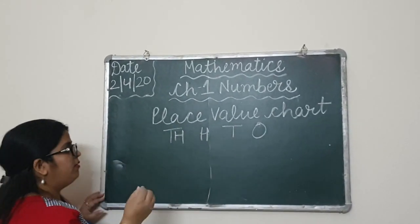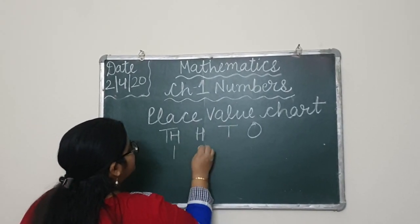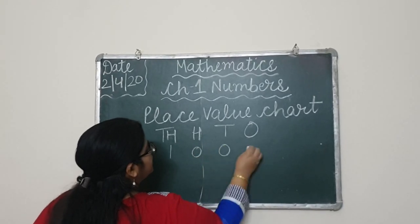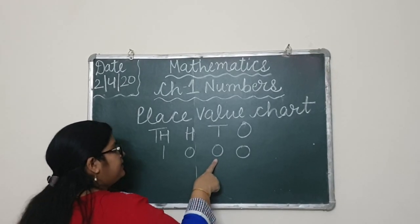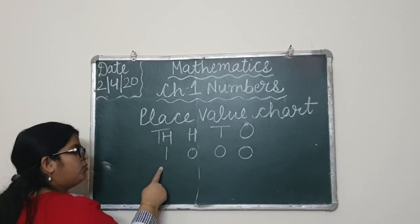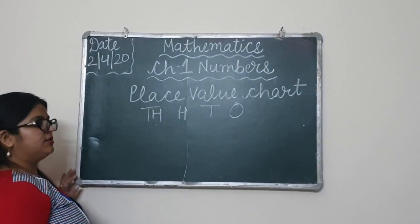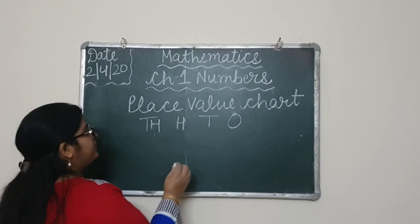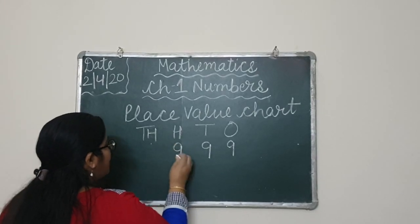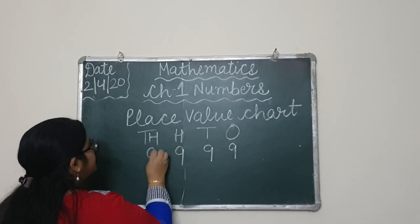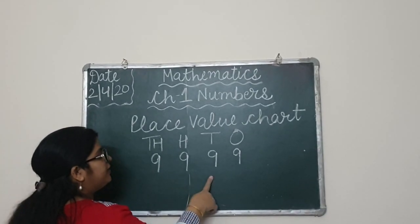We take the smallest number, 1000. We write 0 in the ones place, 0 in the tens place, 0 in the hundreds place, and 1 in the thousands place. The number is 1000. For the largest number, 9999: ones place 9, tens place 9, hundreds place 9, and thousands place is also 9. Nine thousand nine hundred ninety-nine.